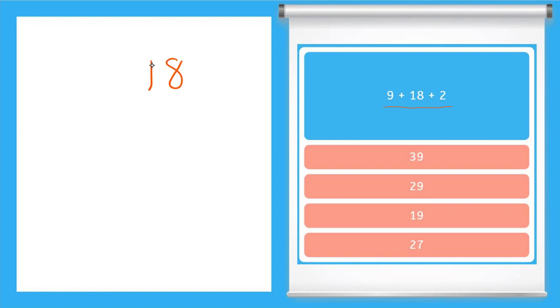I will write it over here: 18. And then I'm going to just line up my numbers based on the place value below them. So then I have a 9 and a 2. Notice I have lined up my ones place.